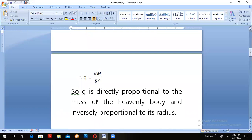Understood? So g is directly proportional to mass of the heavenly body and inversely proportional to its radius.